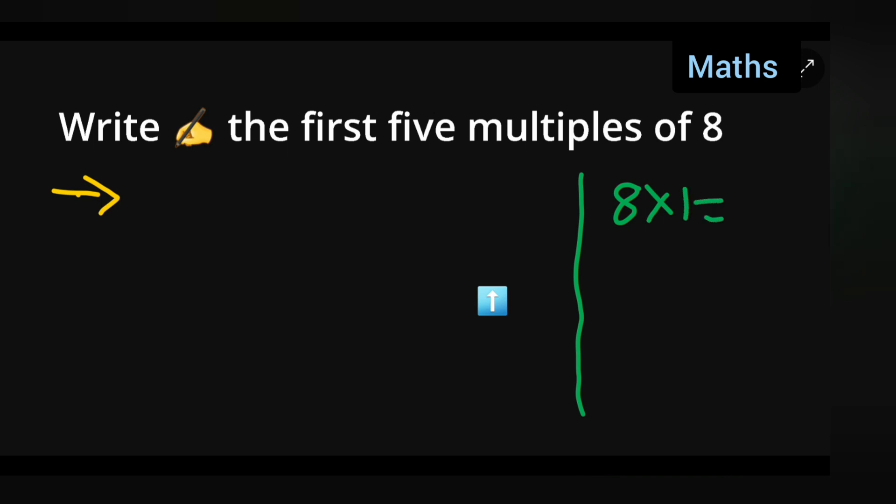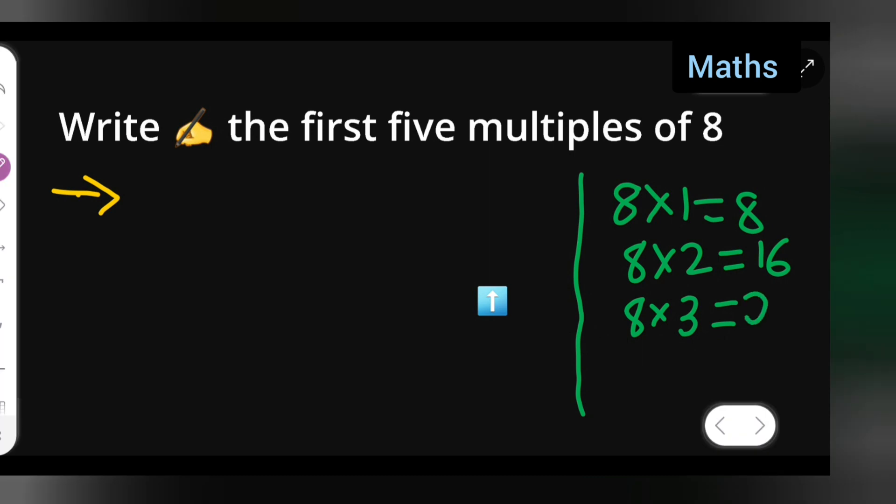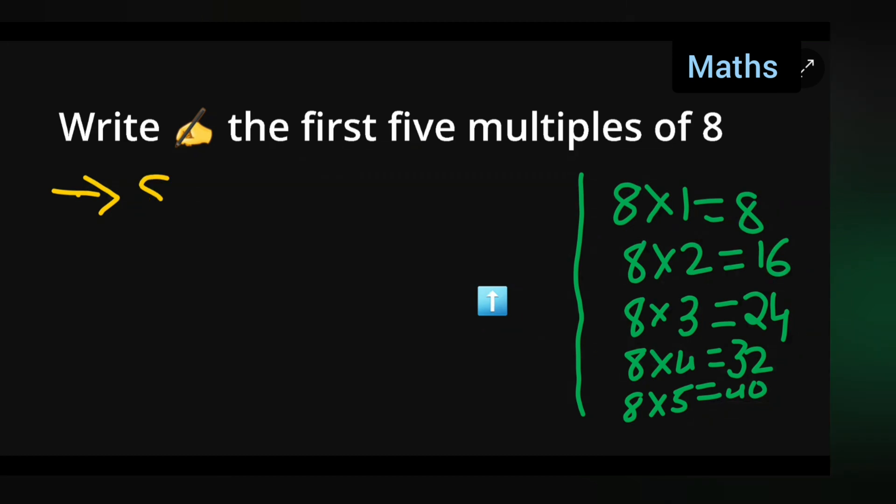8 ones are 8, 8 twos are 16, 8 threes are 24, then 8 fours are 32, then 8 fives you will get 40, right? So you can write: multiples of 8 is...